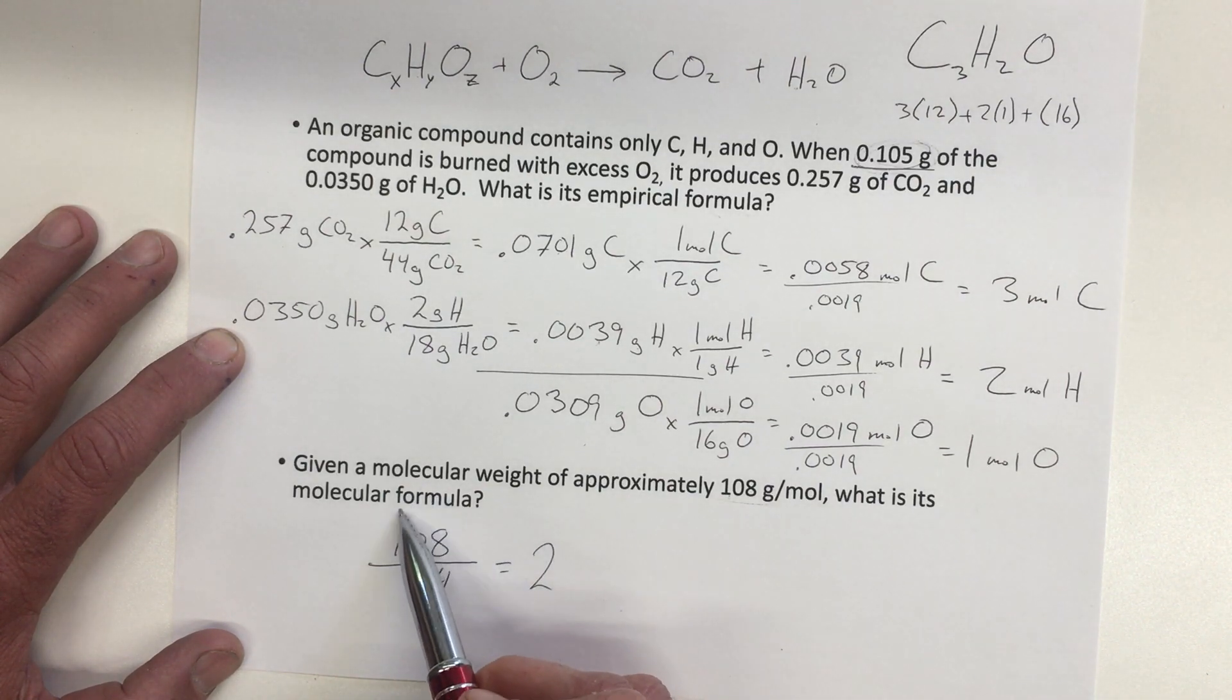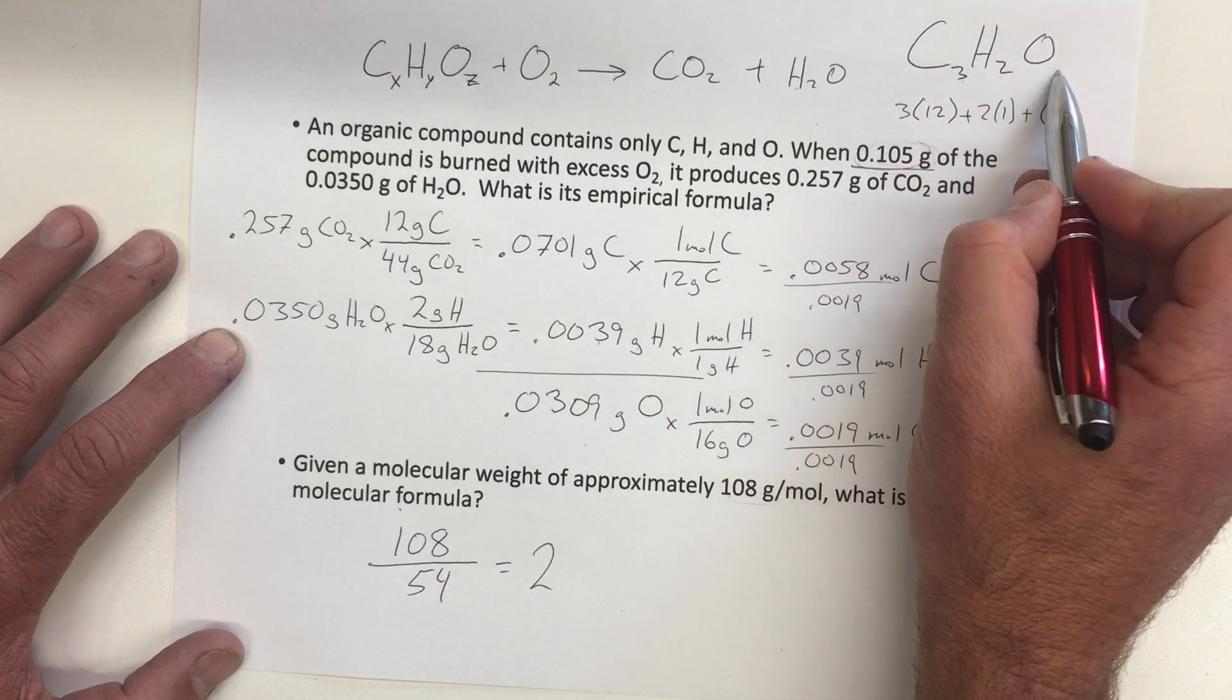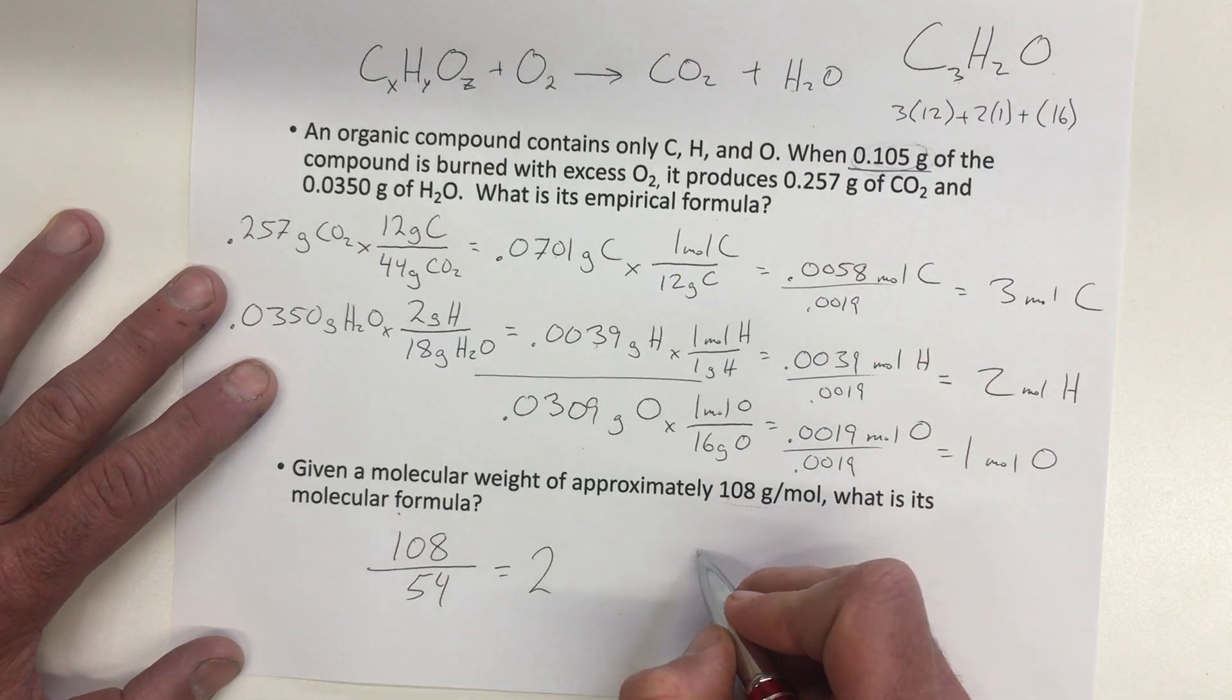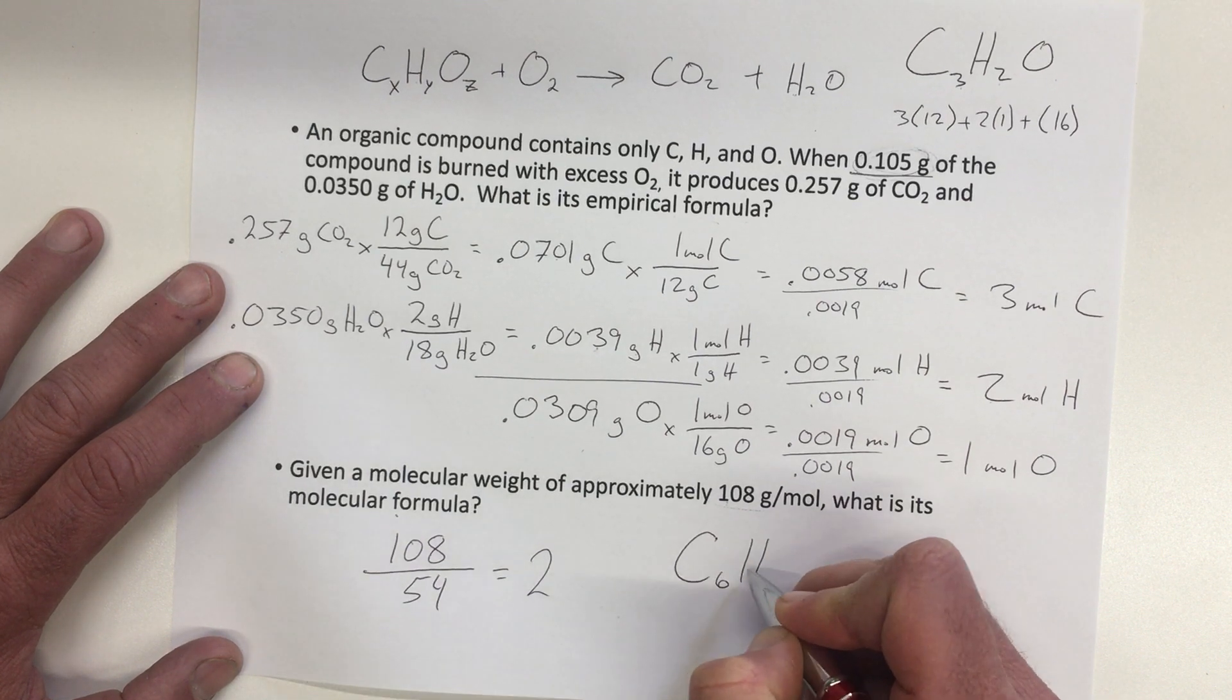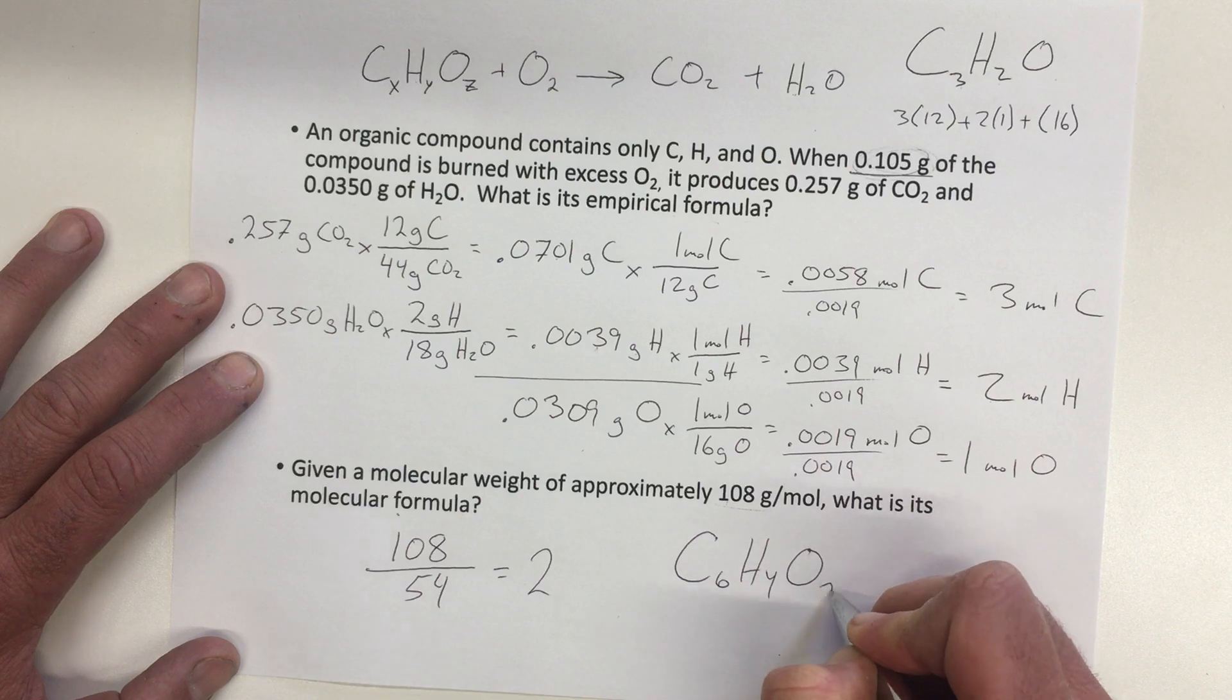So it tells us that our molecular formula is 2 times bigger than our empirical formula. So all of these subscripts need to be doubled. So our molecular formula is C6H4O2.